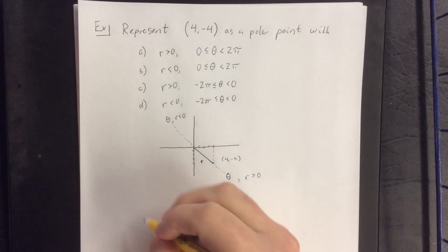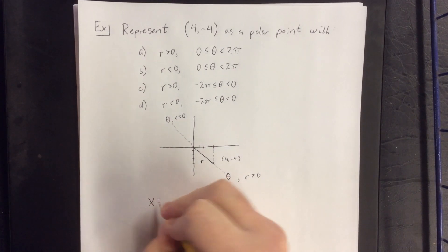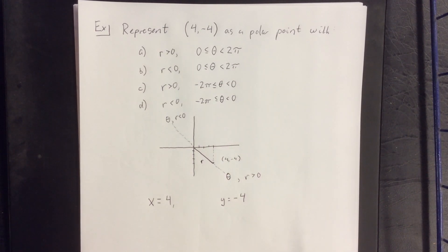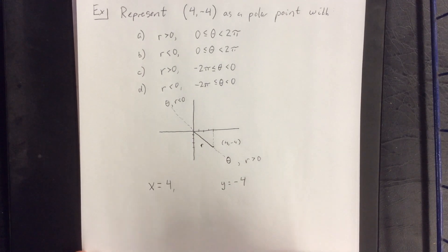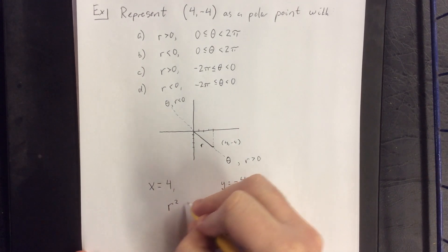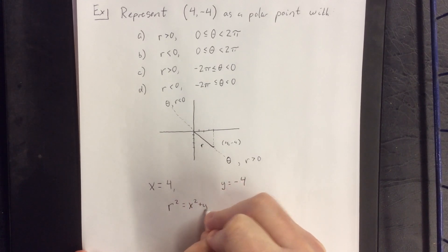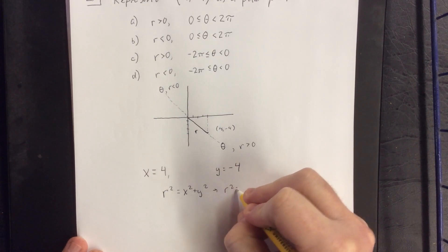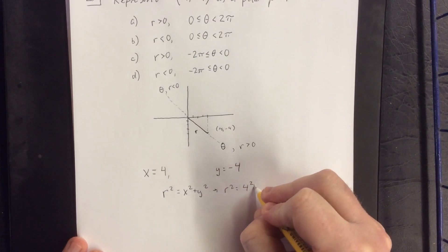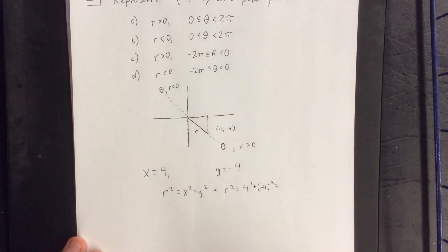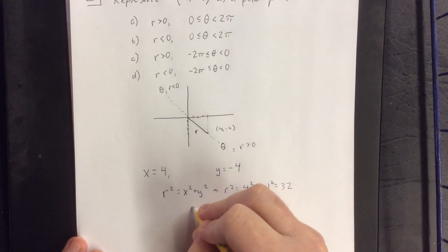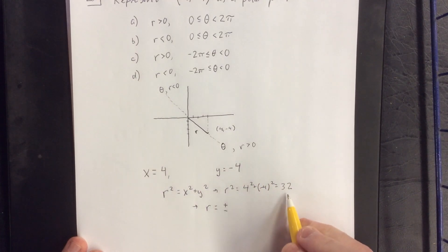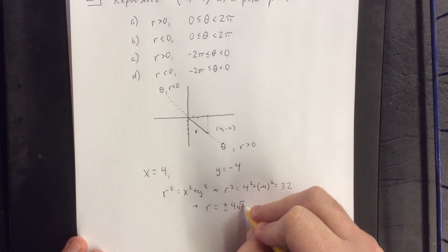With that in mind, I'm aware that x is equal to 4 and y is equal to negative 4. I'm going to start by finding the value of r using the following conversion: r squared is equal to x squared plus y squared. That gives us r squared equal to 4 squared plus negative 4 squared, which simplifies to 32, so r is equal to plus or minus the square root of 32, which simplifies to 4 square roots of 2.